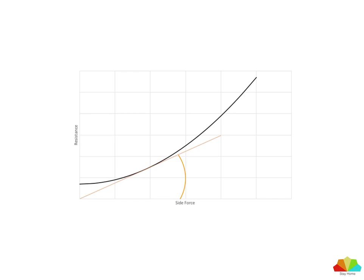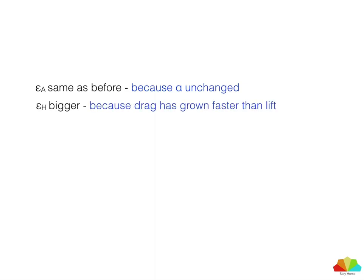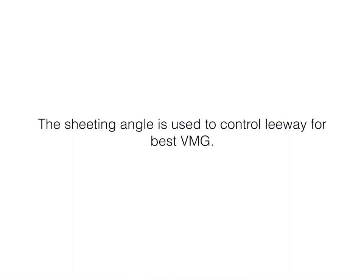So in the example I was just showing, the aerodynamic drag angle is the same as before because the angle of attack to the wind was unchanged. The hydrodynamic drag angle must be bigger because drag grows faster than lift, because drag is related to lift squared. Therefore beta is bigger, and therefore VMG is smaller.